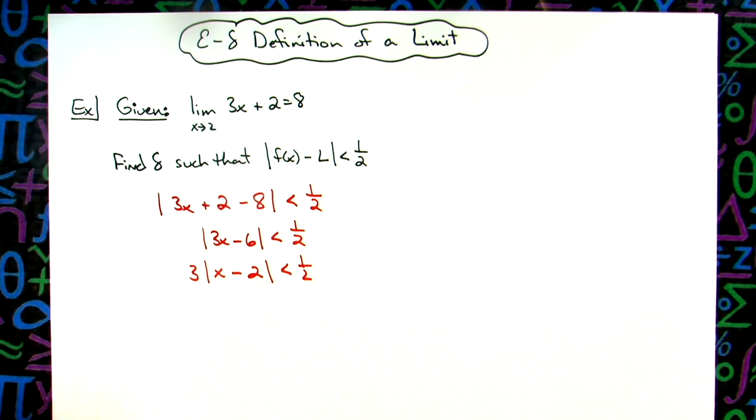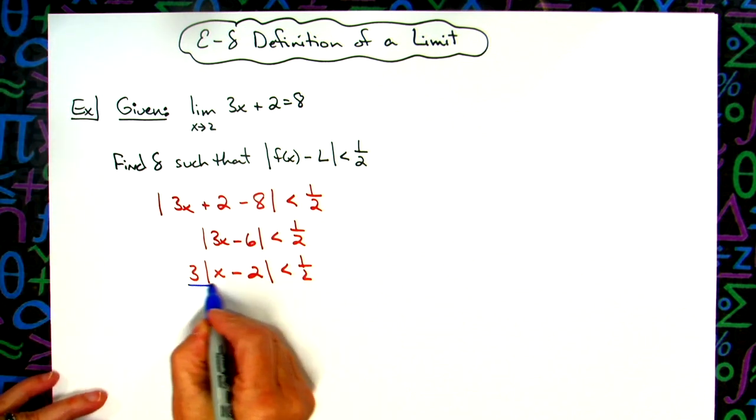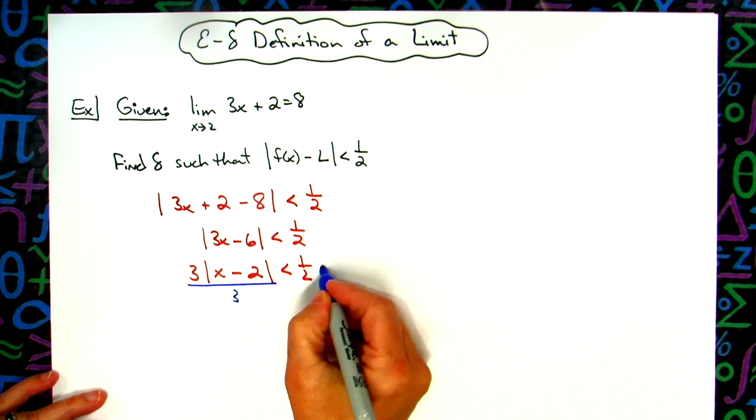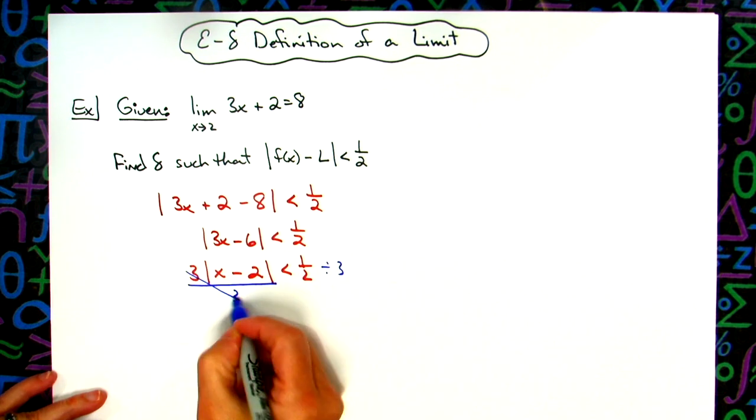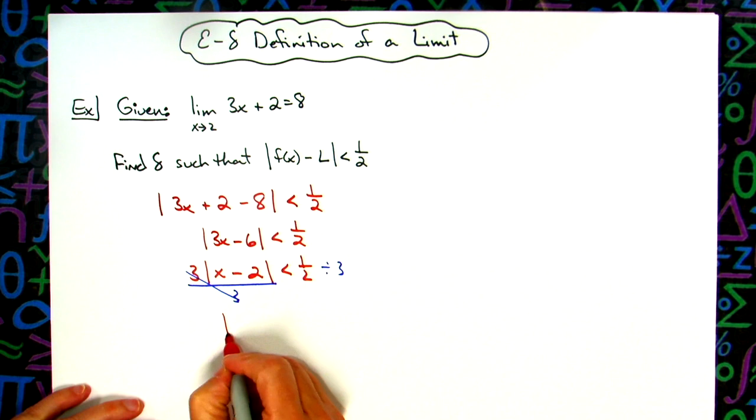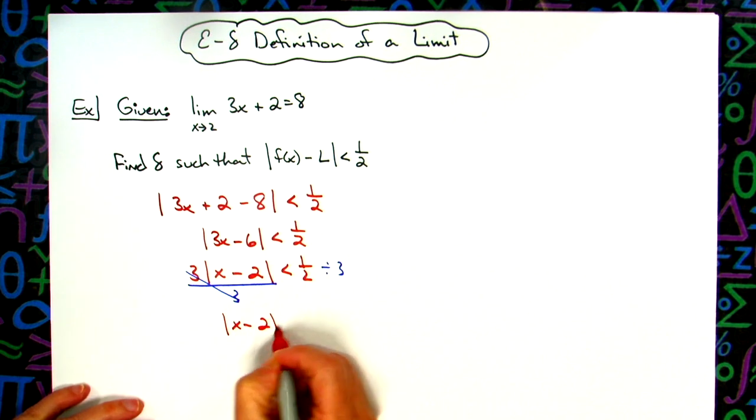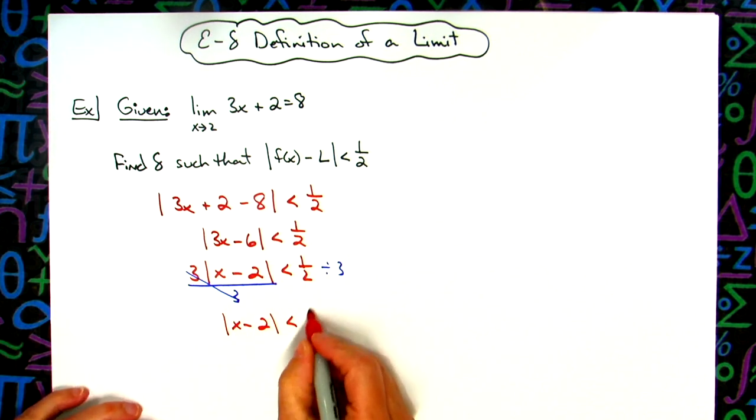I'm going to divide both sides of the equation by three. So I'm going to divide by three, and then over here, I'm going to divide by three as well. That's going to give me the absolute value of x minus two is less than one sixth.